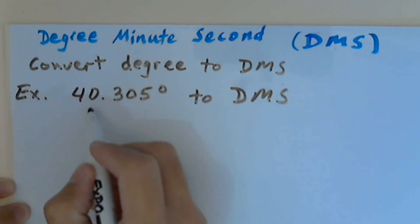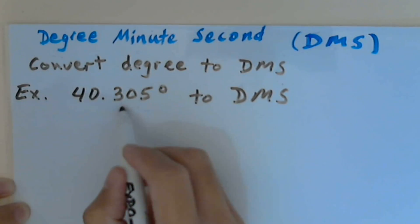I know I have 40 degrees. What about this part? I want to convert this part into minutes. This part is like a percentage of 60 minutes.